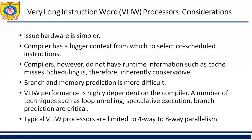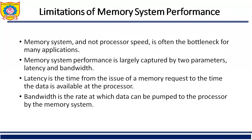How do we overcome these drawbacks and achieve effective parallelism? Both superscalar and VLIW processors have limitations. As developers or engineers, we need to focus on the areas that degrade system performance. The memory system — and not the processor speed — is often the bottleneck for many applications. Memory system performance is largely captured by two parameters: latency and bandwidth.